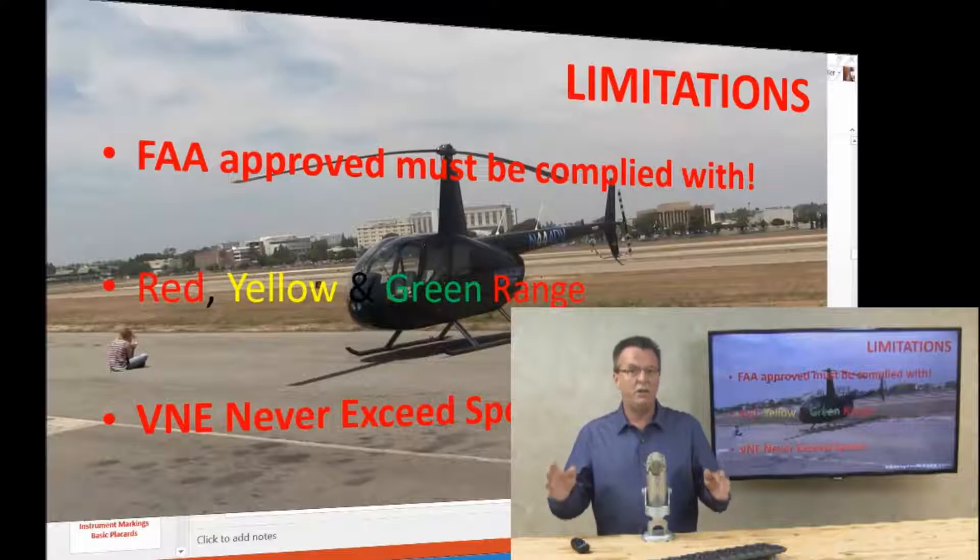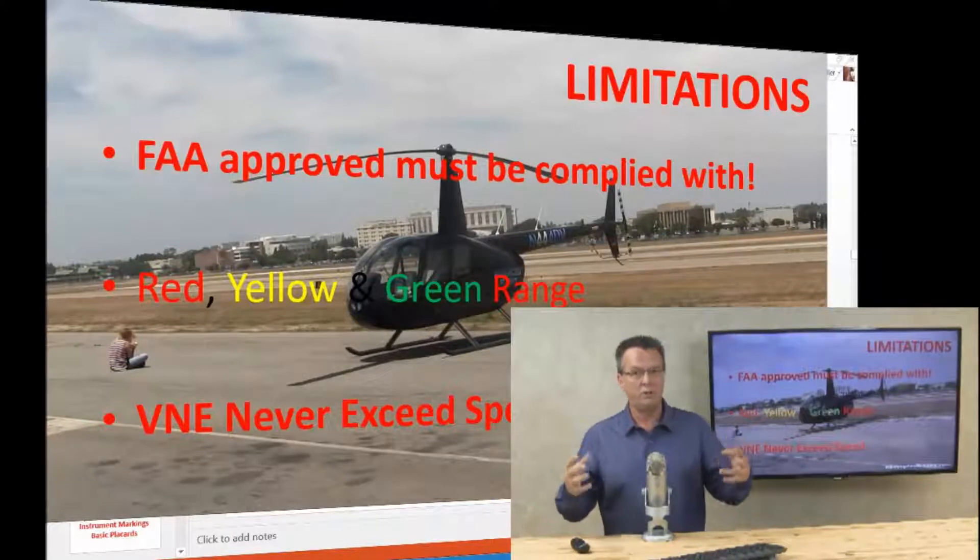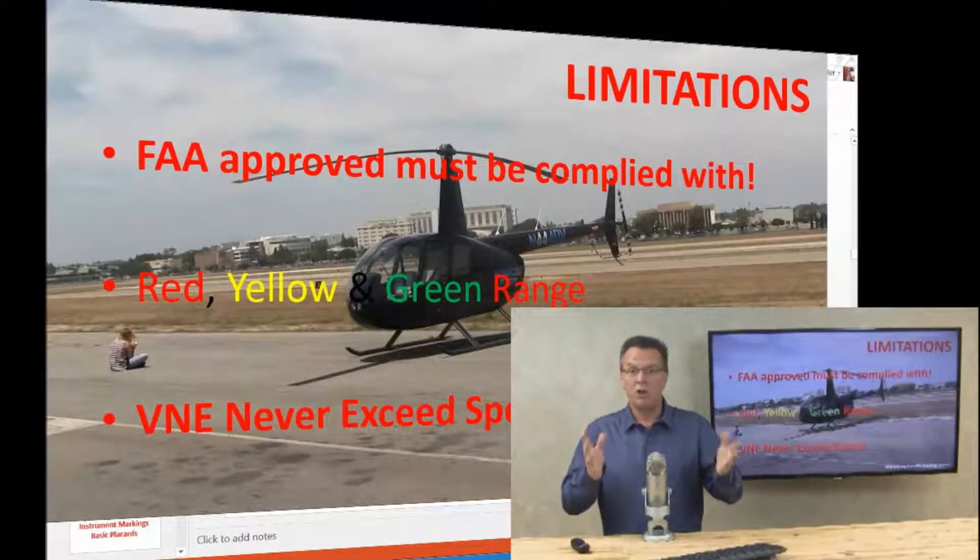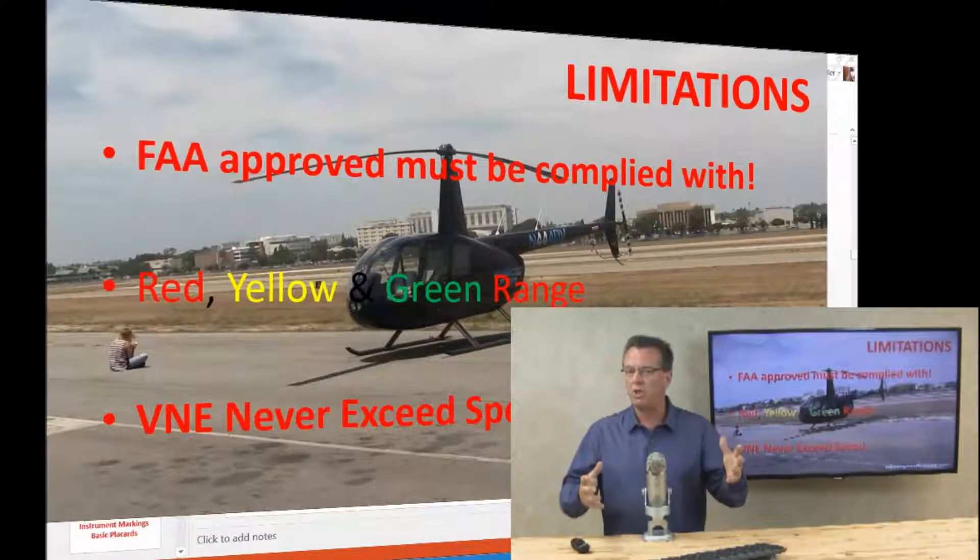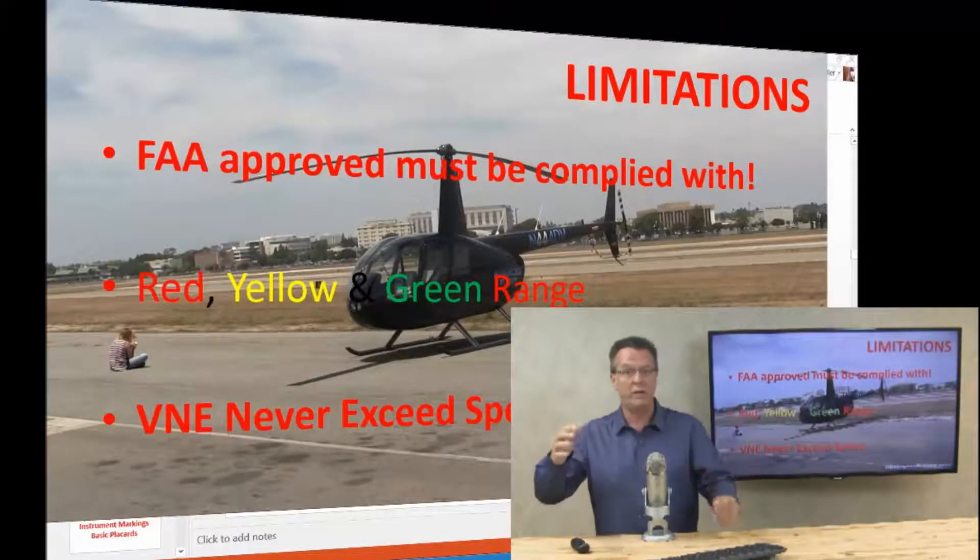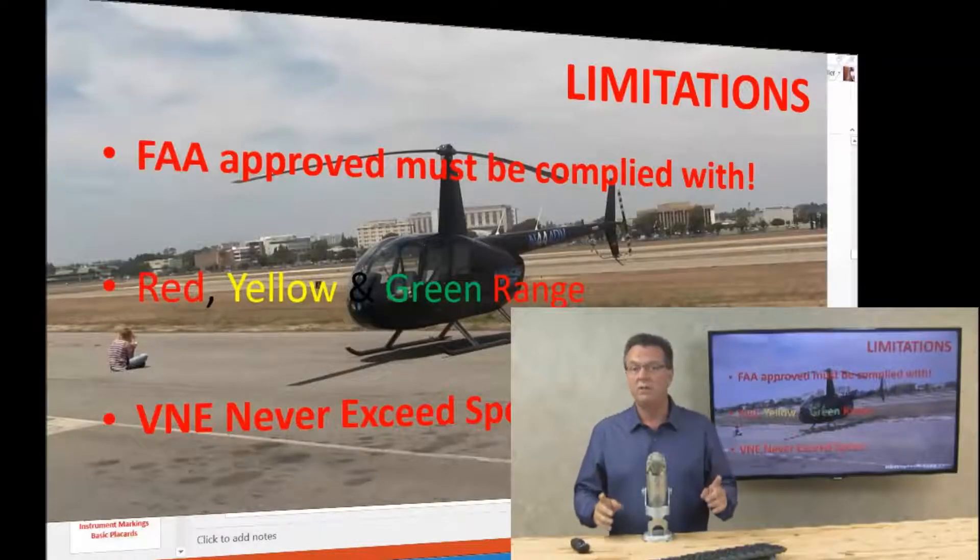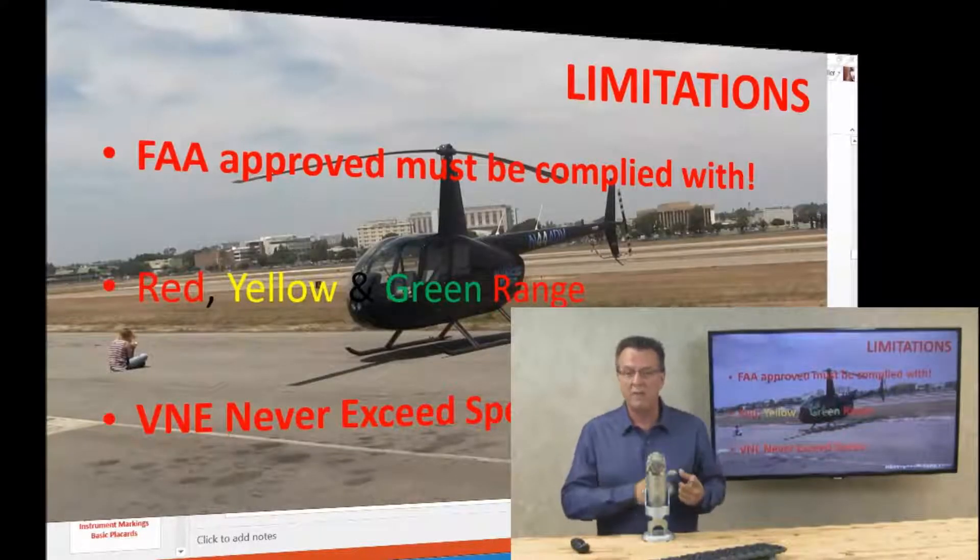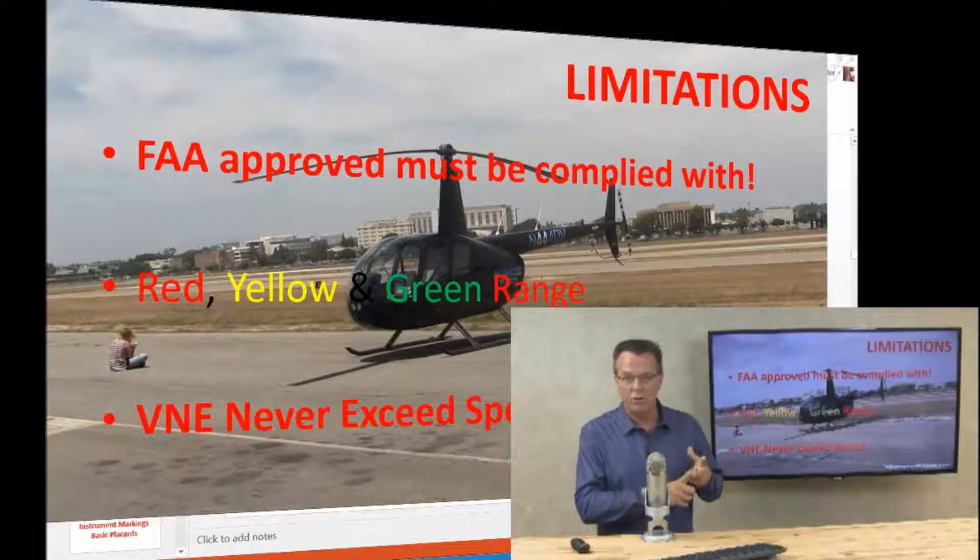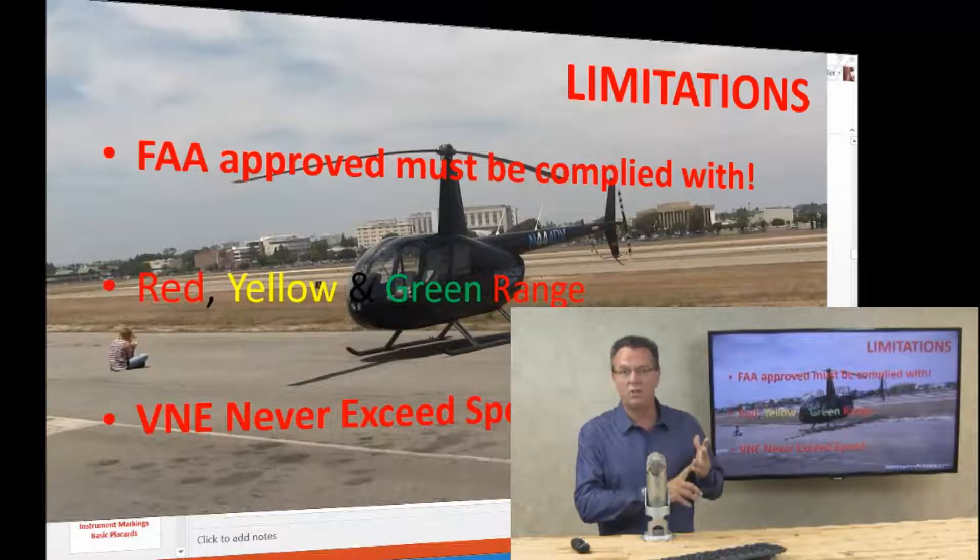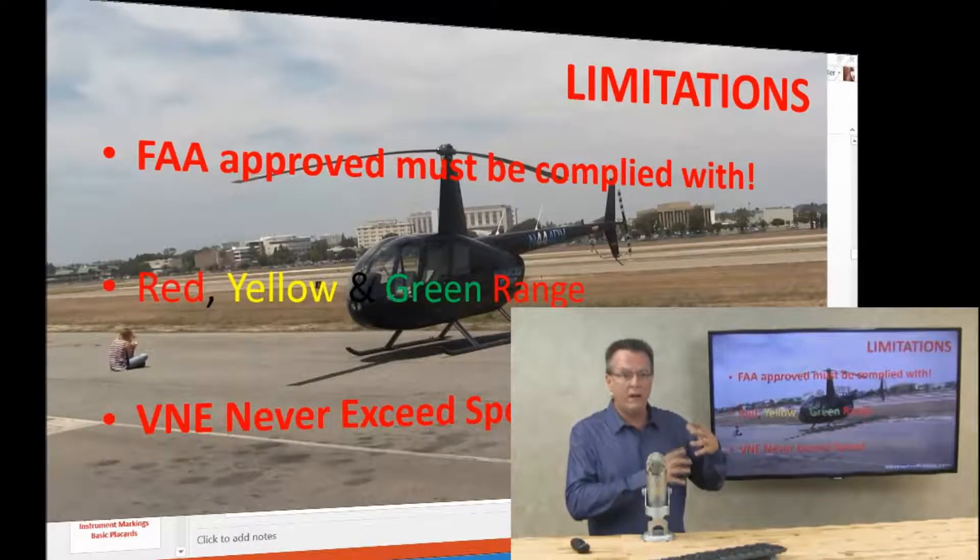When you start moving to the yellow range, that should be drawing your attention to what's going on. Should be drawing your attention to the other instruments and gauges in the aircraft and be cautious of why is this happening, what is changing, what is going on. Because you don't want to get into the red range, which would be exceeding the limitation. If you do exceed the limitation, you must notify the mechanic of what you went over, how long did you go over, how far did you go over, and what things were going on, what led up to that point where you exceeded that limitation.